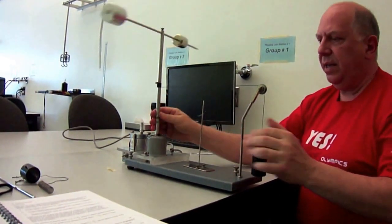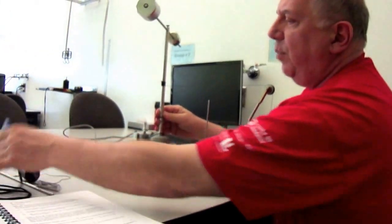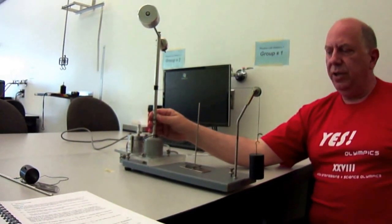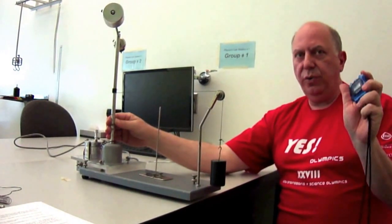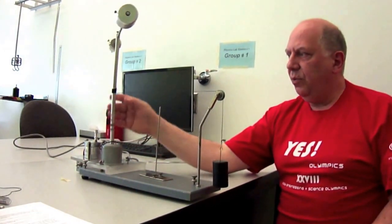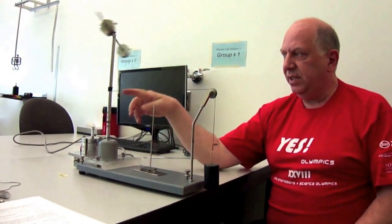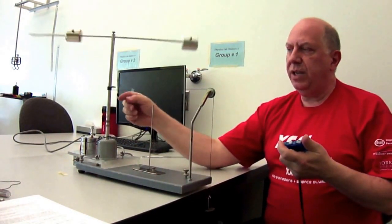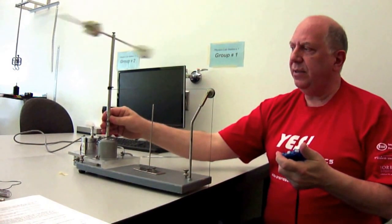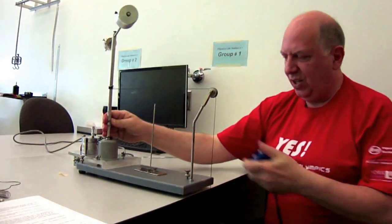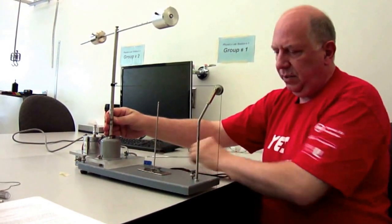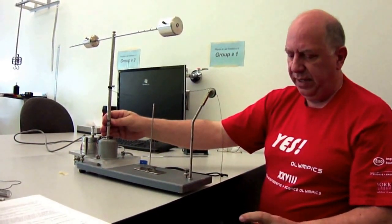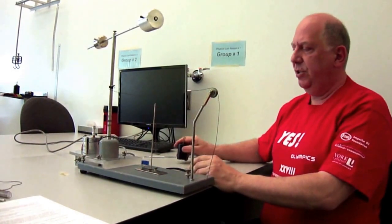And again using our stopwatch, we are going to measure the time it takes for 10 rotations. So we click our stopwatch, we release this rotating shaft at exactly the same time, and measure the time for 10 rotations. Once you've done that, you repeat this three times I believe, so you have an accurate time for the time for 10 rotations.